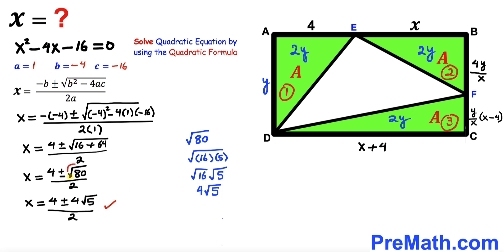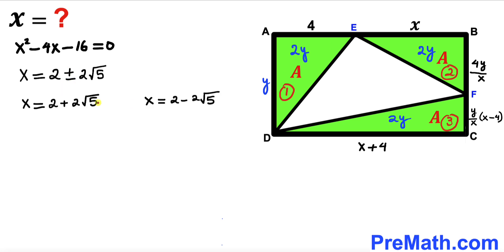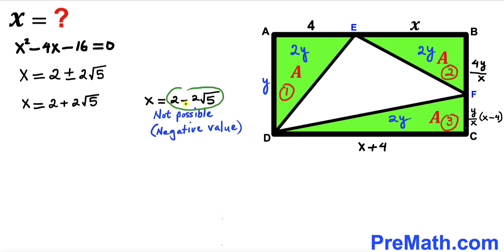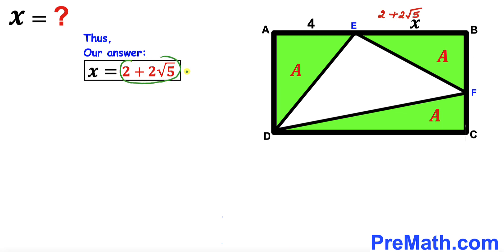Replacing √80 with 4√5, we get X equals 4 over 2 plus or minus 4√5 over 2, which simplifies to X equals 2 plus or minus 2√5. Separating the positive and negative cases, the negative value of X is rejected since X represents a side length. Therefore X equals 2 plus 2 times square root of 5, which is approximately 6.472 units.